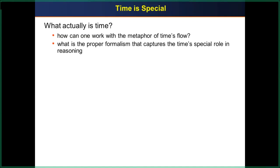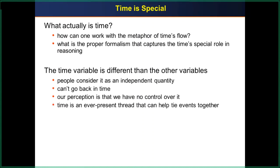First, let's remember what actually is time. What's a good formalism that captures time? Time is also very different from other variables — there are spatial variables and non-spatial variables. With spatial variables, you can go from X at different locations, take five or six more, and change your mind again. In the time dimension, you can't really do that. It's a completely independent quantity, very different from any other variable, because simply you can't go back in time.